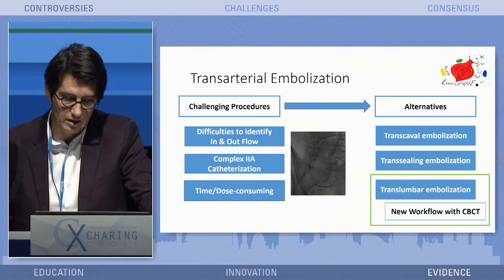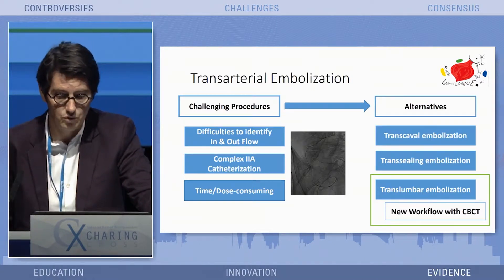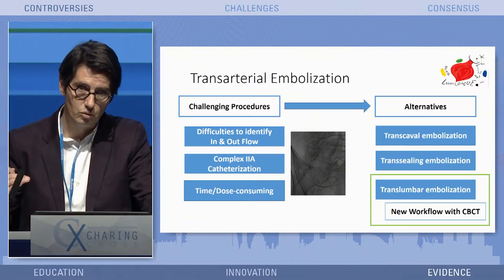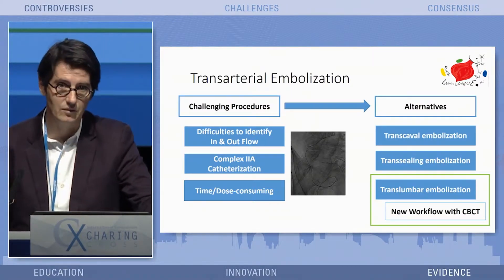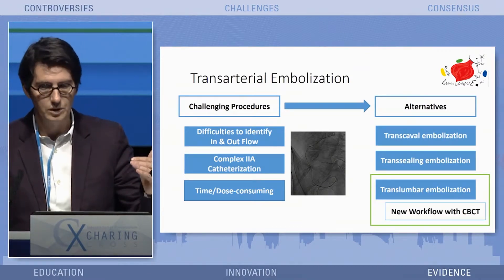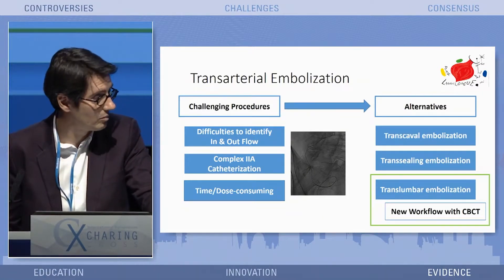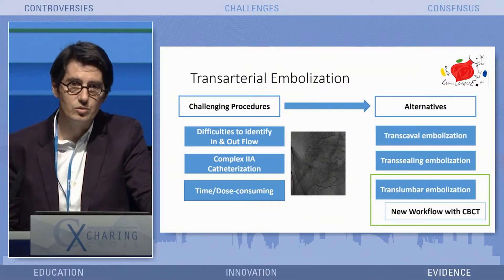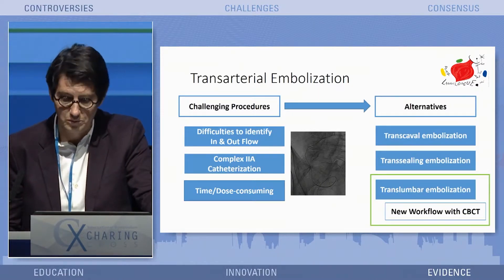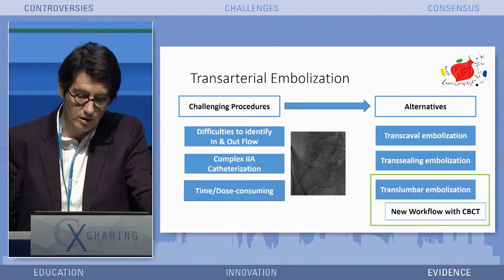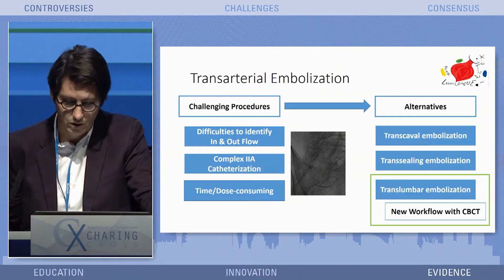Transcaval embolization is actually not that difficult to perform if you routinely use fusion. But it only works if the endoleak is not too low in the endograft sac, because if you're too near the bifurcation of the IVC, your transcaval needle will have issues getting into the nidus. Since we switched five years ago to doing all our cases in a hybrid room, we routinely use cone beam CT as part of our routine workflow. The trans-lumbar approach seems to be the right approach for our patients.